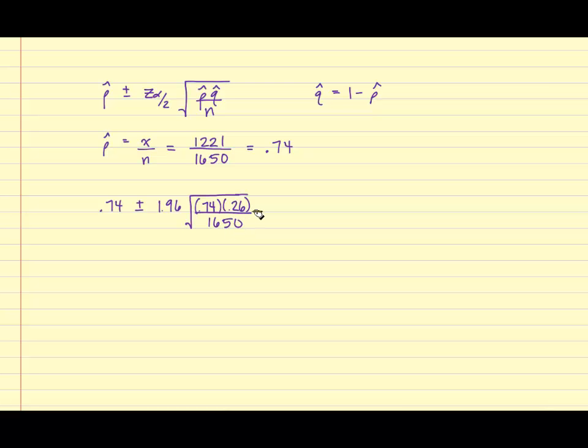For this next step and the following steps, we're going to simplify this into pieces. First, I'm going to simplify what's under the radical by taking 0.74 times 0.26, and that's 0.1924.